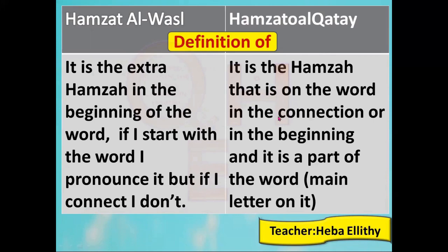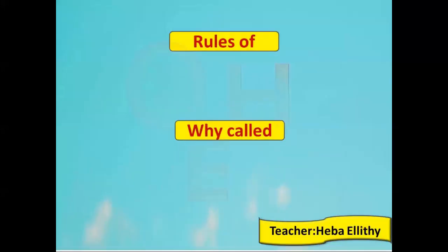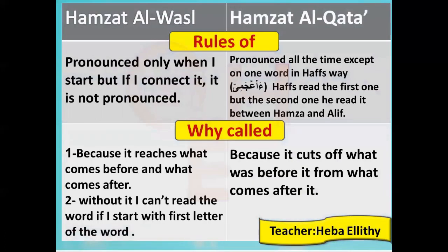Hamzat al-Qata is the Hamza that is on the word both in connection and at the beginning — it is a part of the word, it is a main letter. It can come at the beginning, middle, or end of the word. But Hamzat al-Wasl only comes at the beginning.